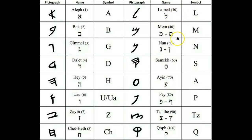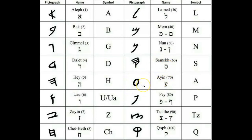The next letter is the Nun, which represents seed or life. In the ancient Hebrew you can see it actually looks like a seed, and in the modern Hebrew it makes the N sound. Then the next letter is the Samach, or Sam, which makes the S sound and means support or propping staff. Then there's the Ayin — it's a circle because it represents the eye — meaning to see or experience. In modern Hebrew it makes the Uh sound.